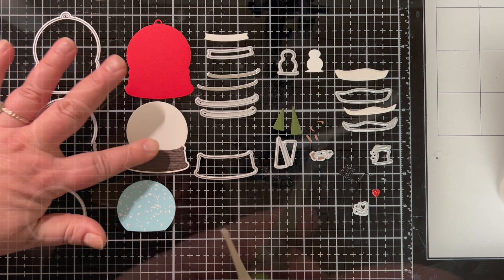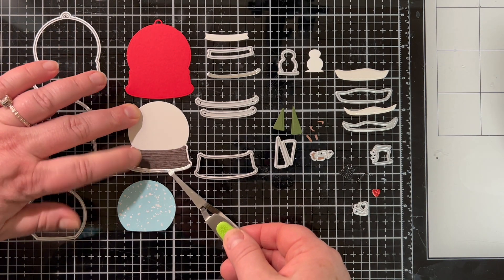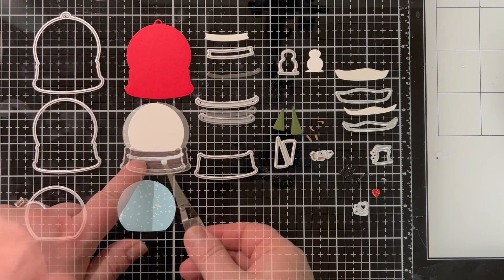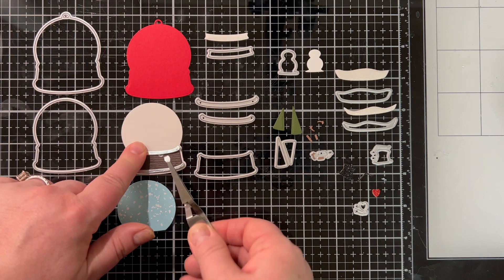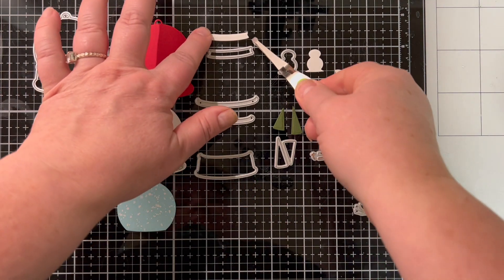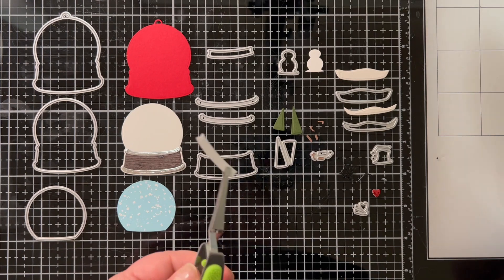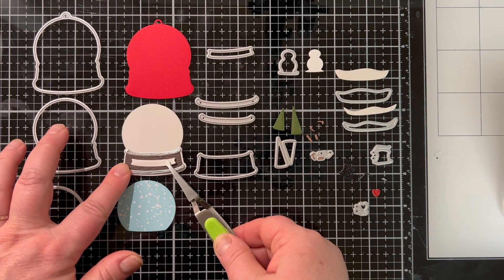Now right here what I'm doing is wrong. You don't want to put the base of the snow globe on first, you actually want to put that blue background on first, but I'll fix it. You'll see there's no stress in card making, we just make it work, it's just paper right?